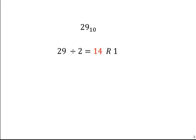This is the first step. For our next step, we use the quotient 14 as our new dividend. So we take 14 divided by 2, and that gives us 7 remainder 0.